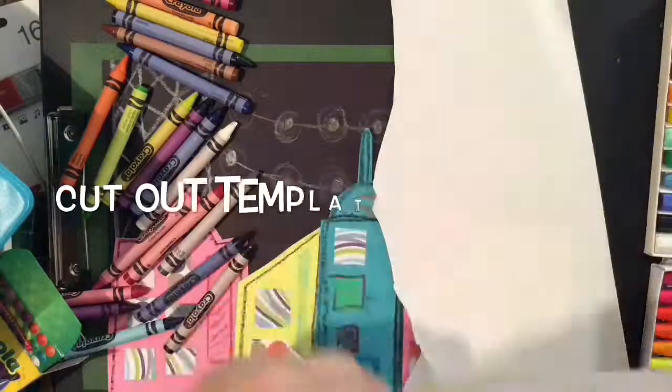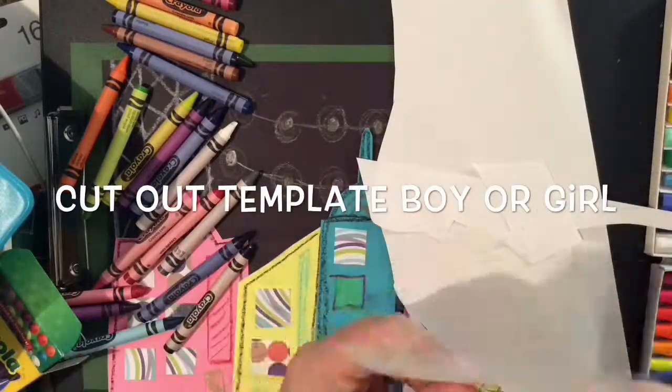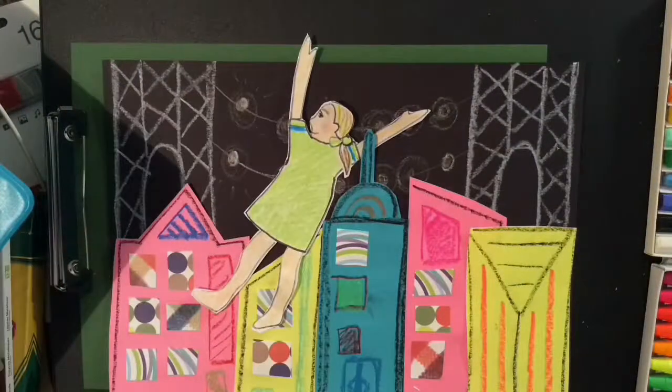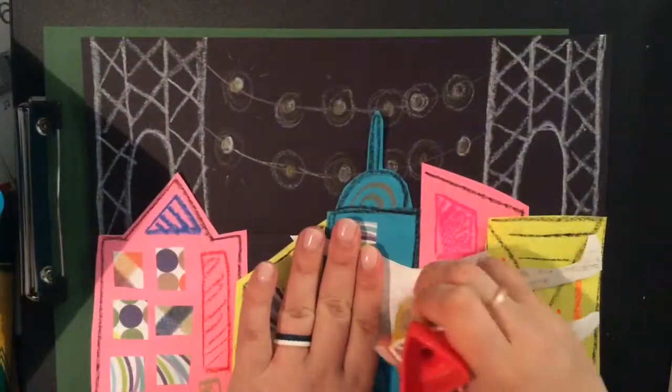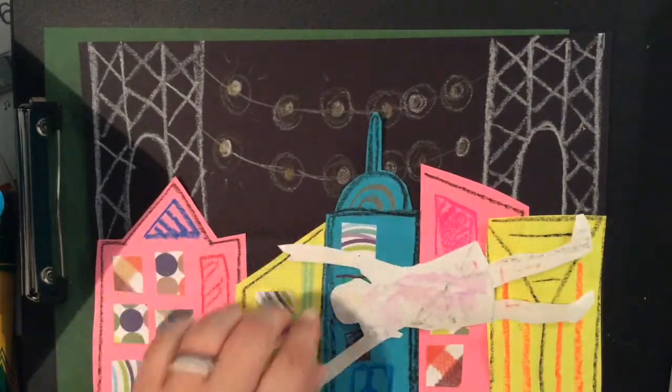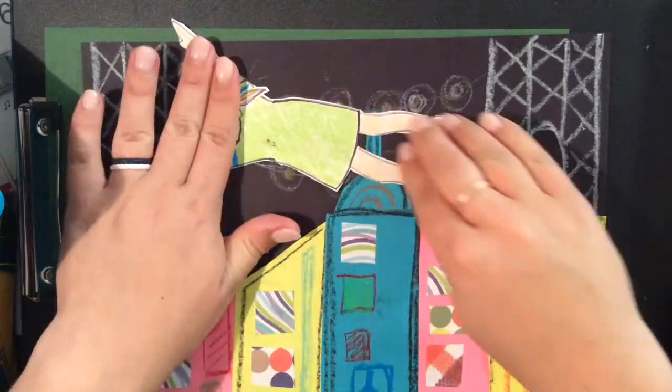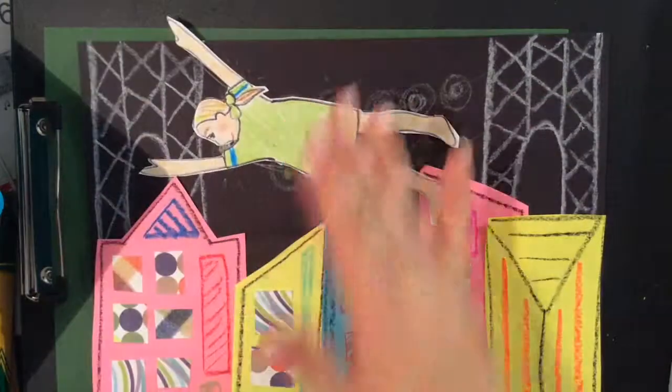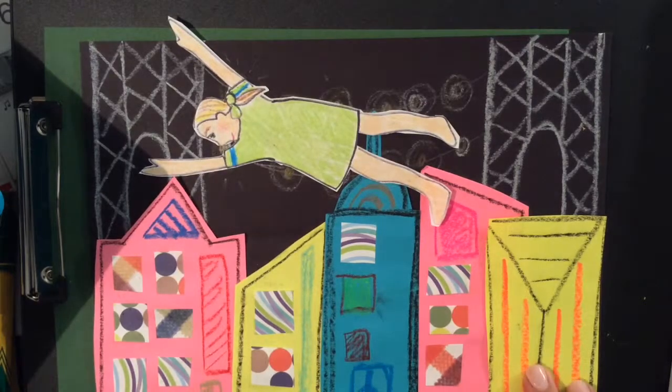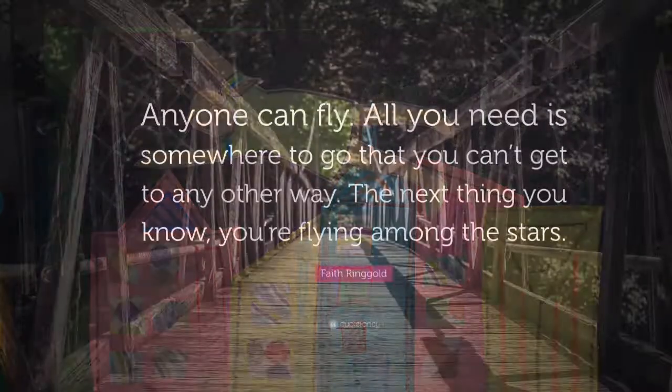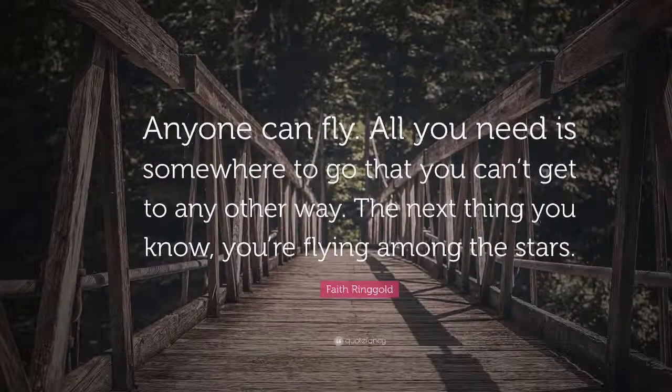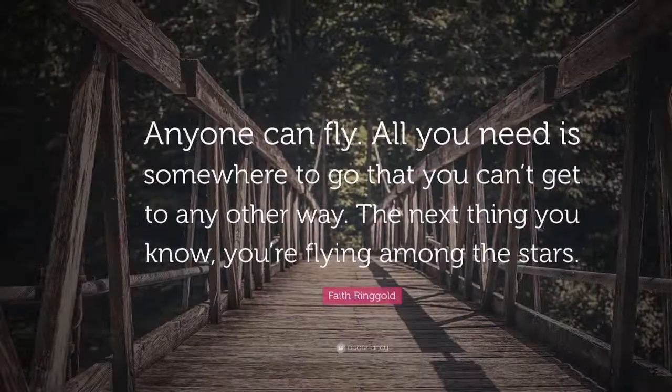You're going to go ahead and cut out your template, and then you can glue it in the sky. And this resembles the image of Cassie and her brother flying over the city. Now flying is a metaphor for being free and finding freedom. So just remember that as you're creating this artwork. One of the quotes by Faith Ringgold is, anyone can fly. All you need is somewhere to go that you can't get to any other way. The next thing you know, you're flying among the stars.